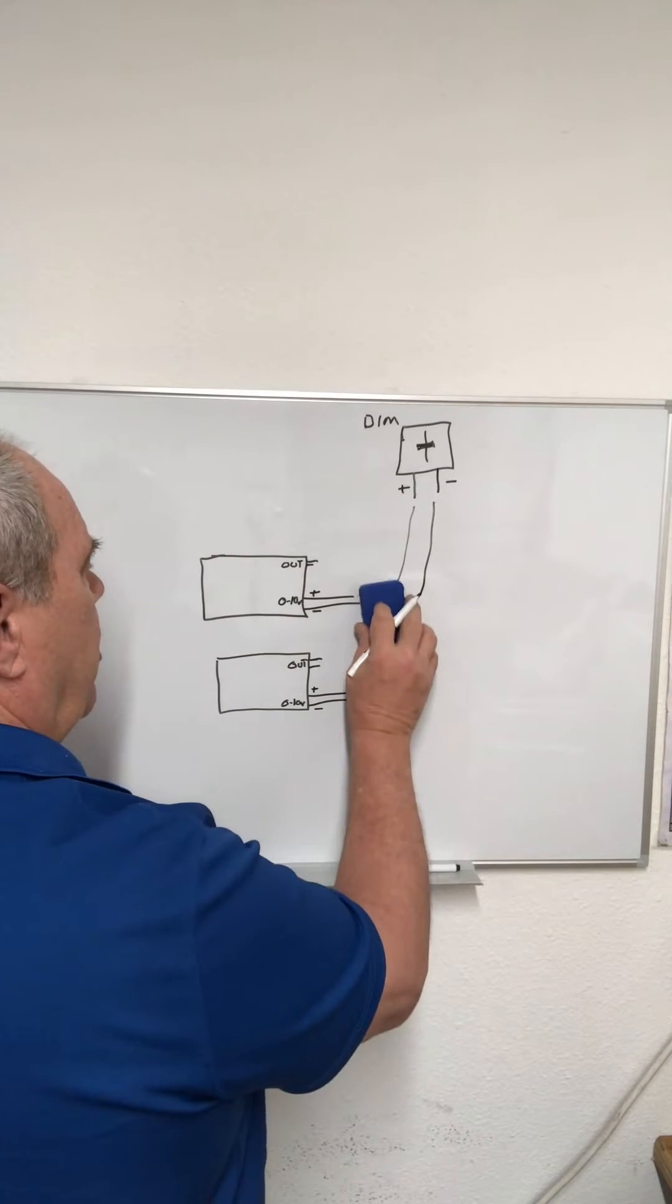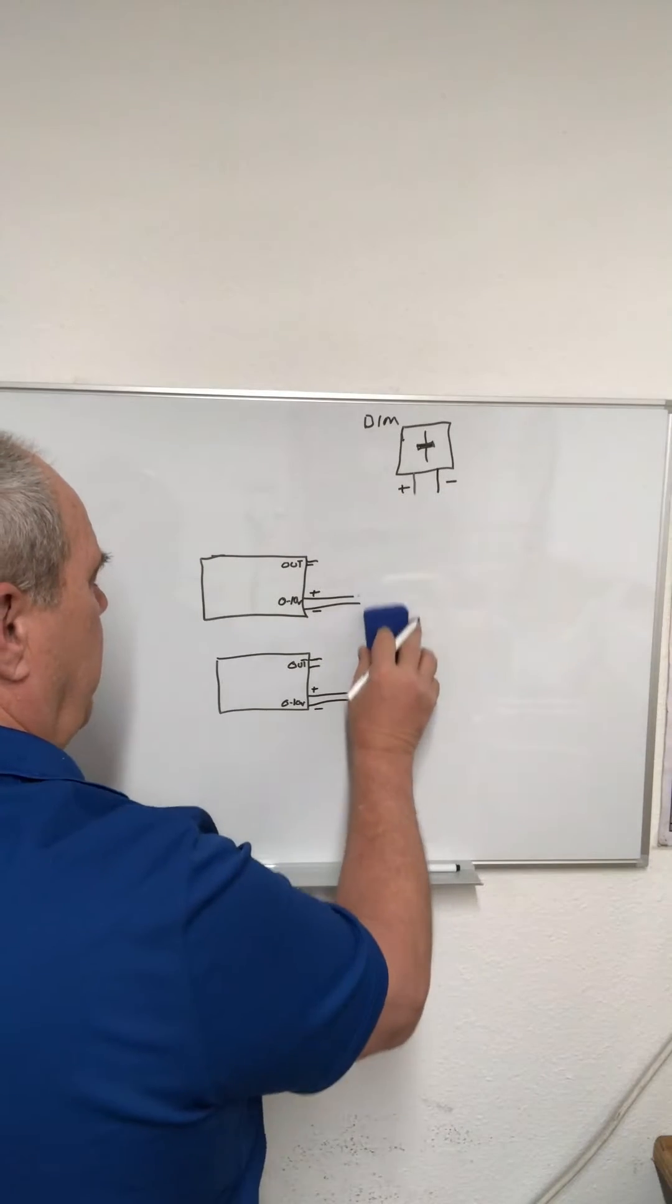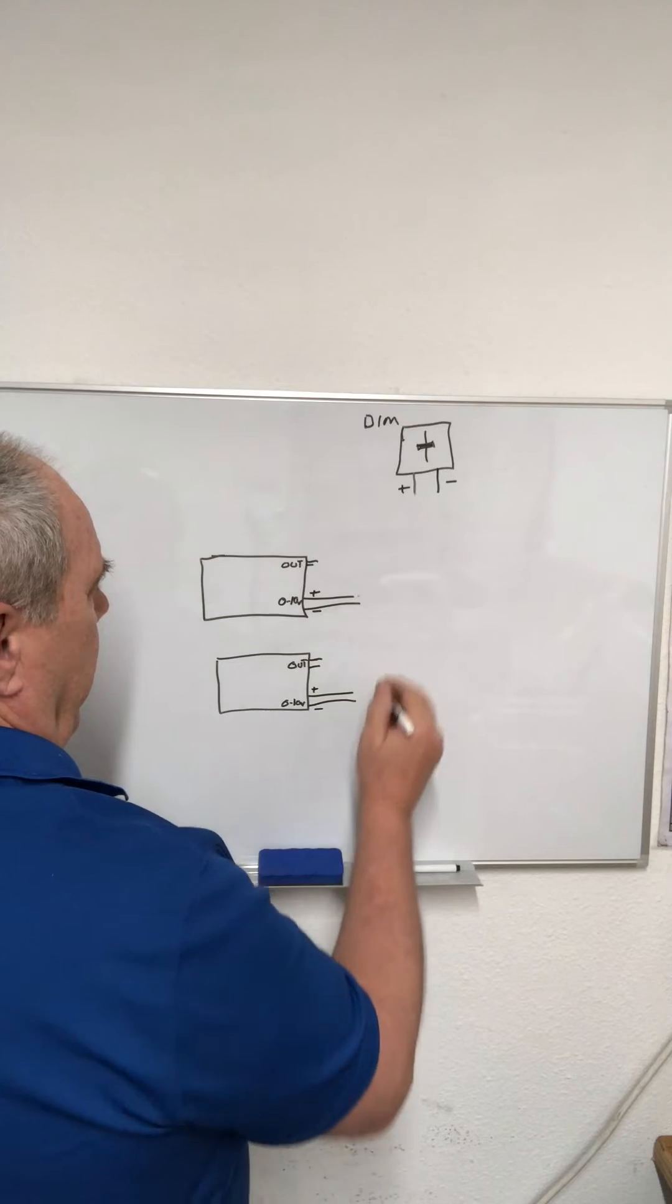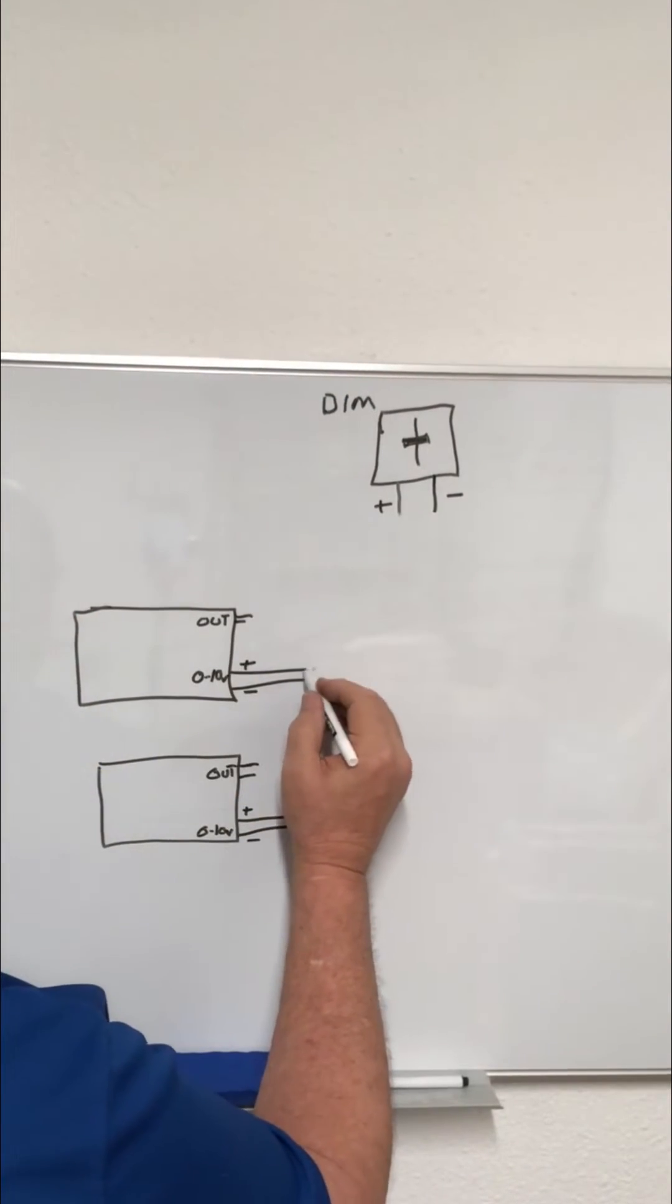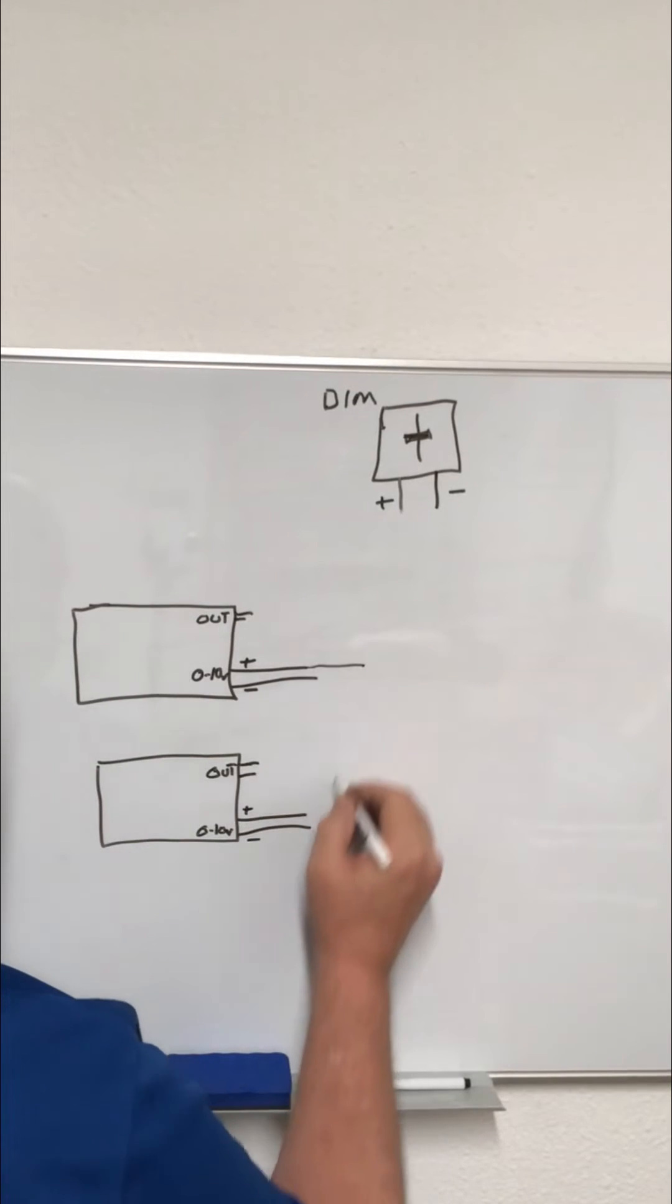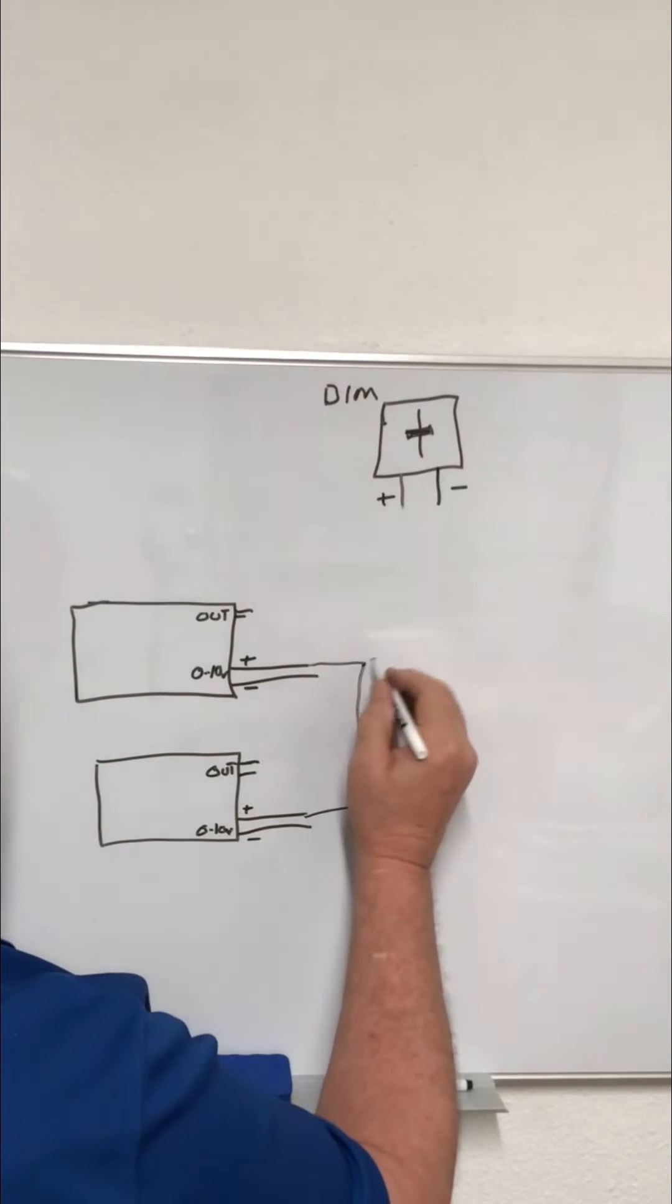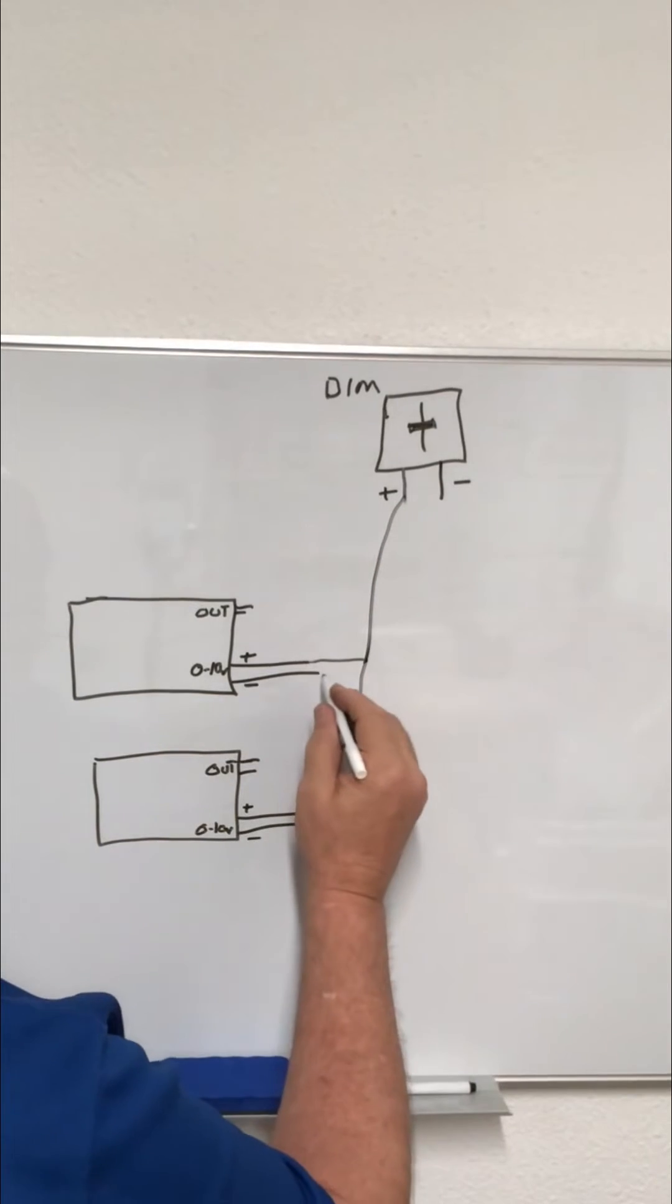If you have multiple drivers and you want to hook them up to one dimmer, that can be done also. There's a few ways you can do that. One way, the recommended way, is to actually tie the two together - the positives tied together and the negatives tied together.